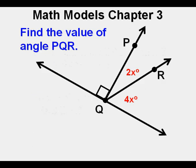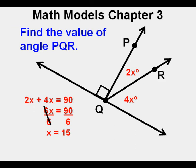Let's look at problem 6 on your test. Find the value of angle PQR. Most of the students did a great job of solving for x. They set it up as 2x plus 4x equals 90. The next step was to combine like terms to get 6x equals 90. The final step to solve for x is to divide both sides by 6, so x equals 15.